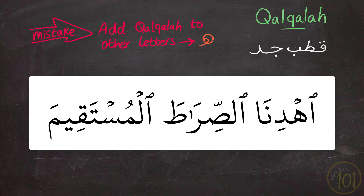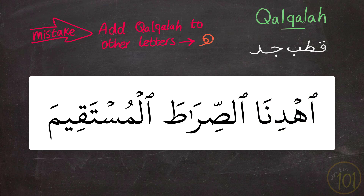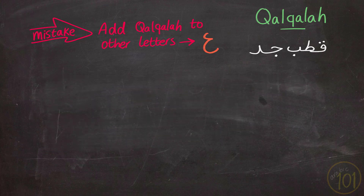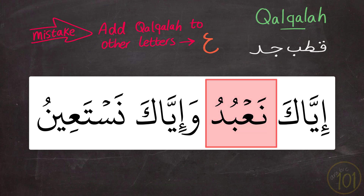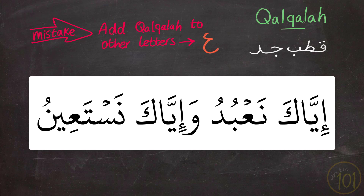Directly after the ha there is a dal, and that is it. Another mistake found in Surah Al-Fatiha that involves adding qalqala needlessly is in the next ayah. Saying 'na'abudu' with qalqala is adding it needlessly and this should not happen.